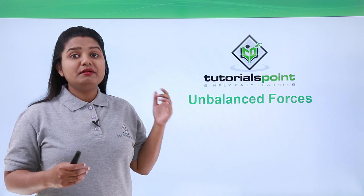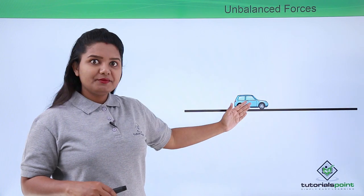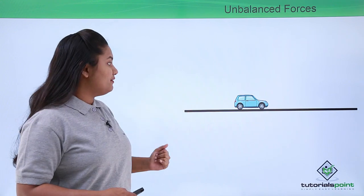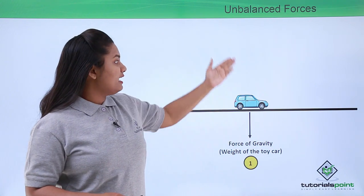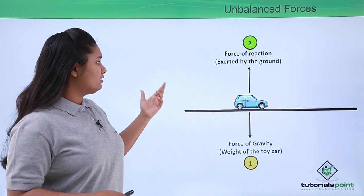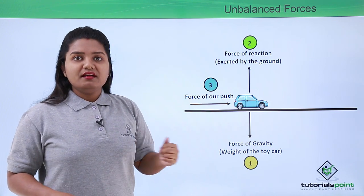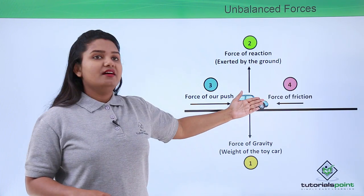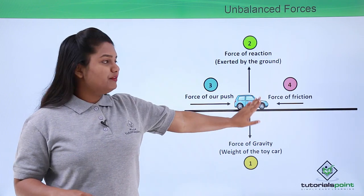Hello everyone. In this video we will be talking about unbalanced forces. Here we have an example of a toy car. The forces acting on this toy car are: first, the force of gravity in the downward direction due to its weight; second, the force of reaction in the upward direction exerted by the ground; and third, the force of push that we apply if we want the toy car to move.